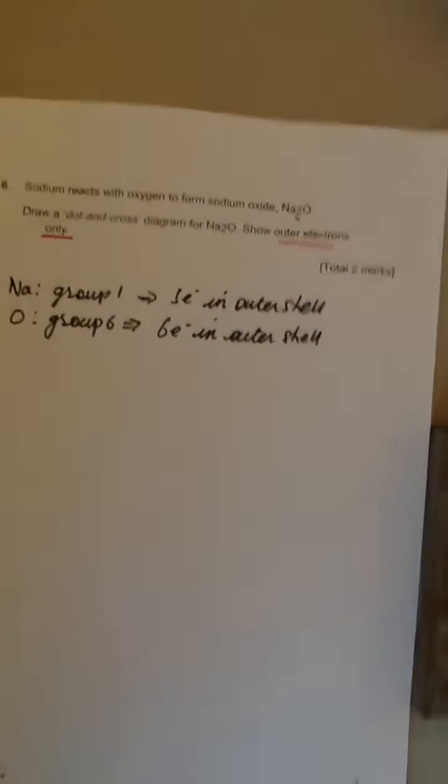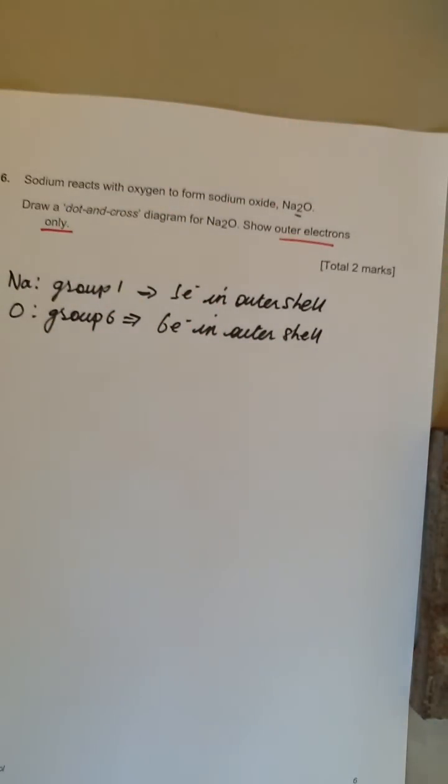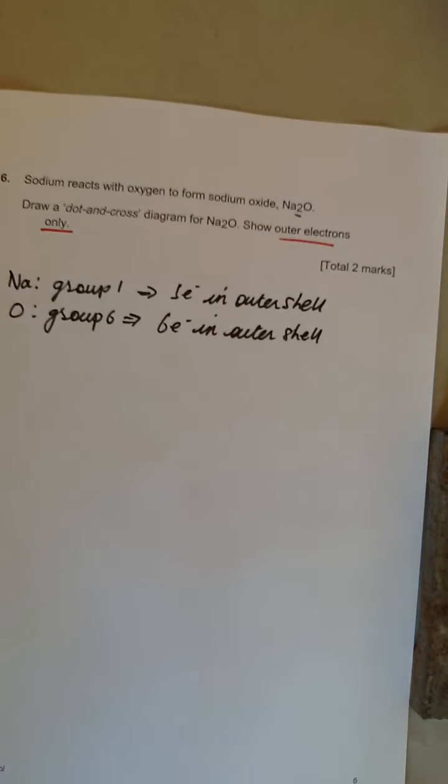The important bits are that sodium wants to lose one electron. Every sodium wants to lose one electron so it will have a full outer shell. Oxygen wants to gain two electrons so it has eight electrons in its outer shell.